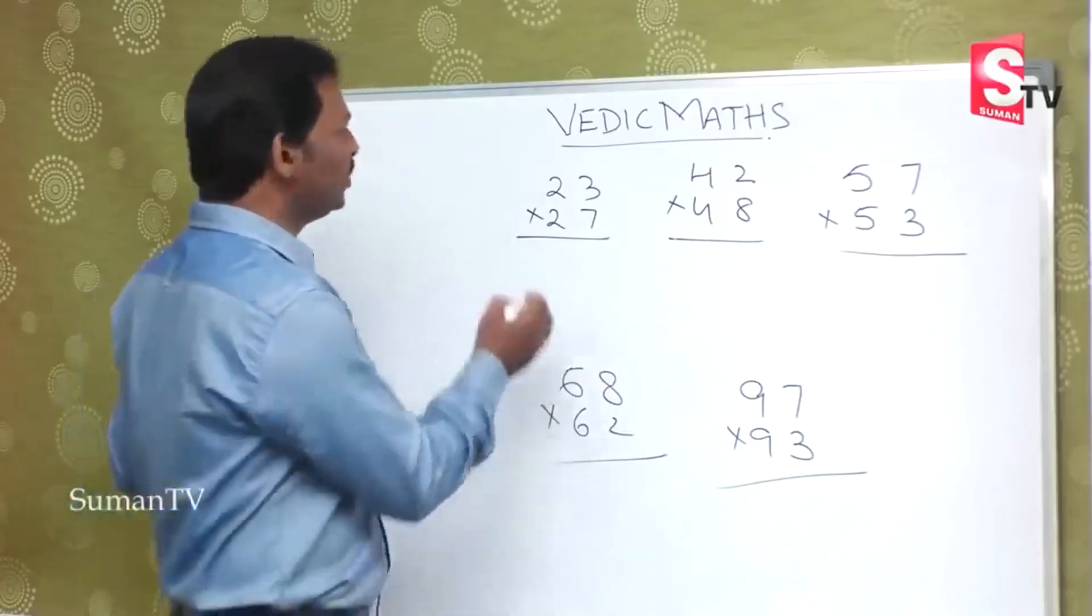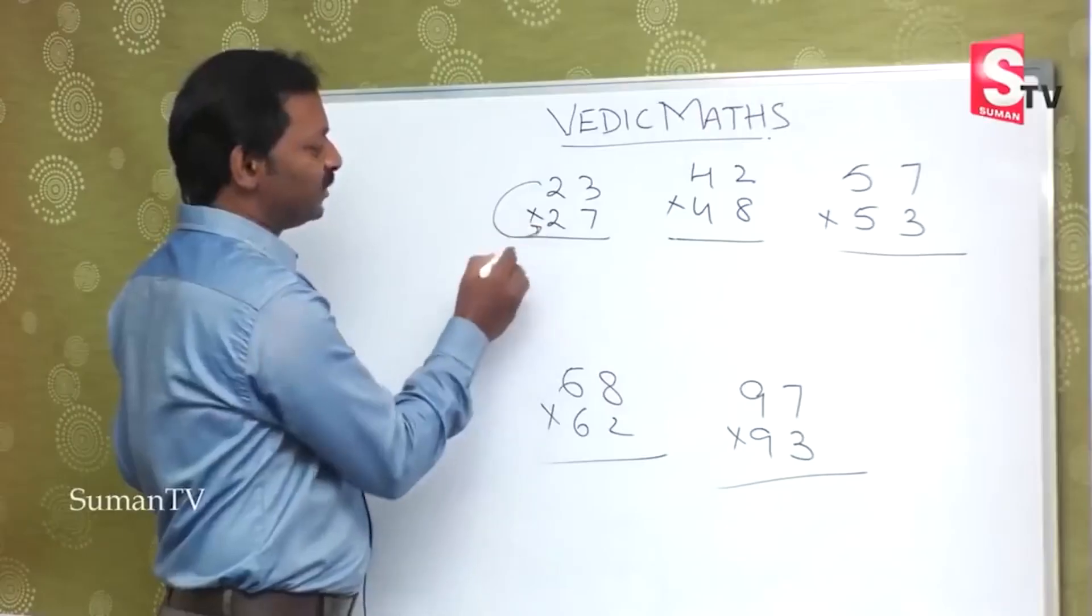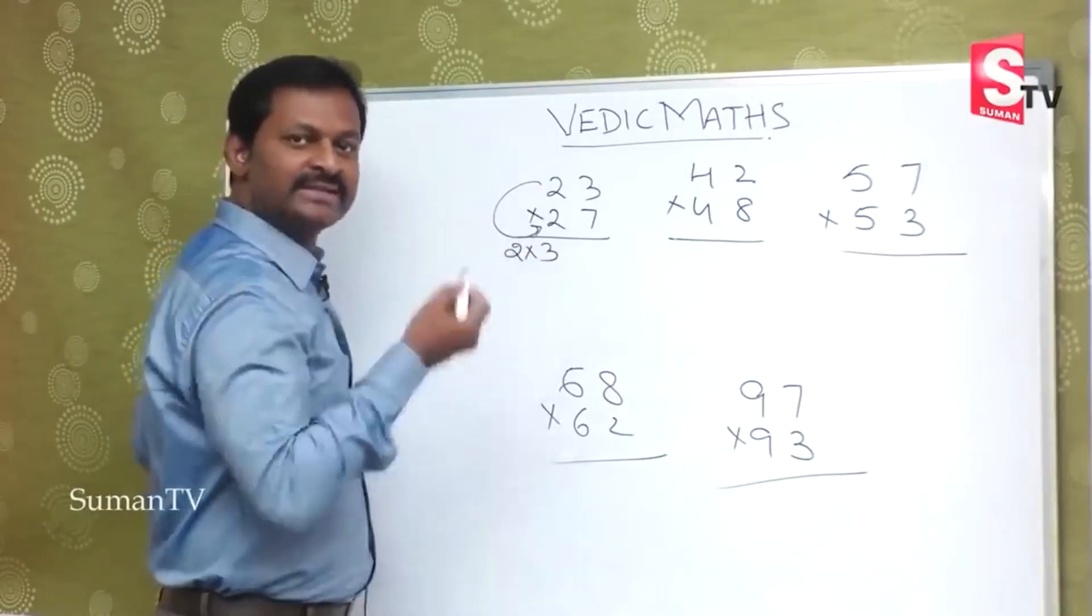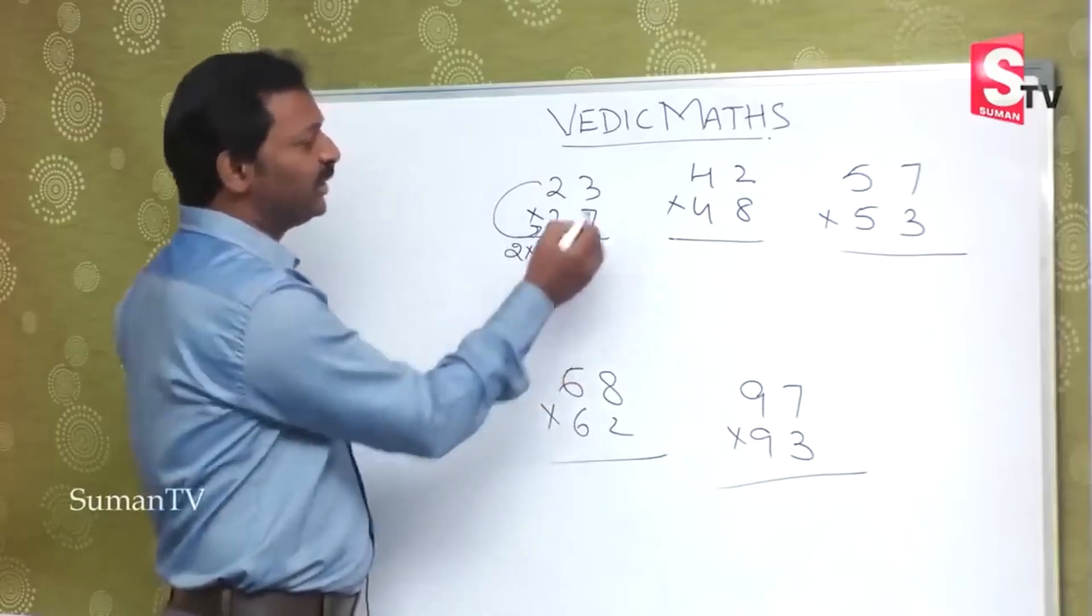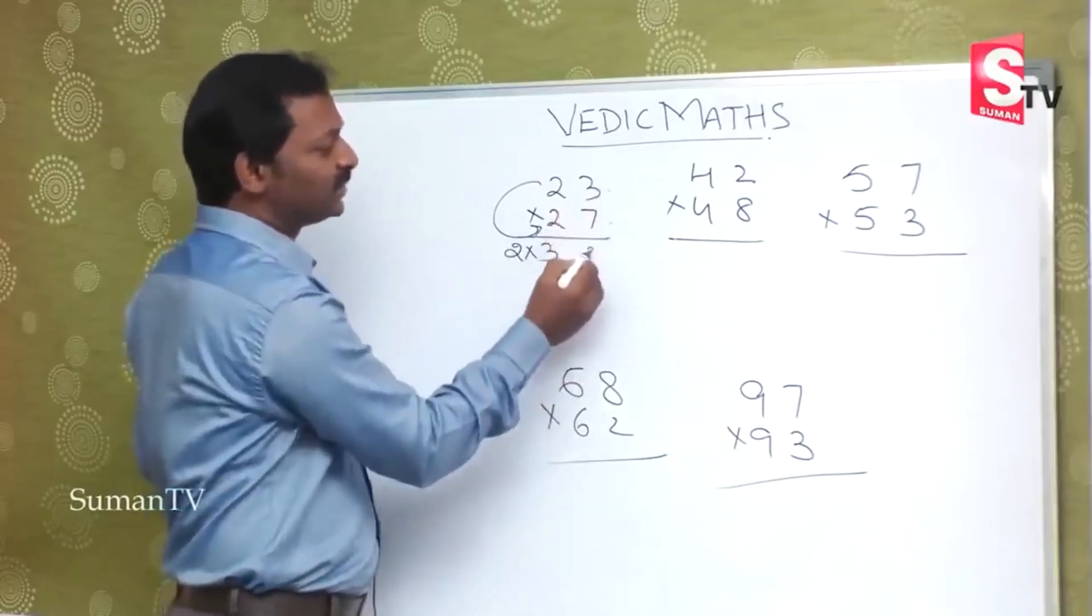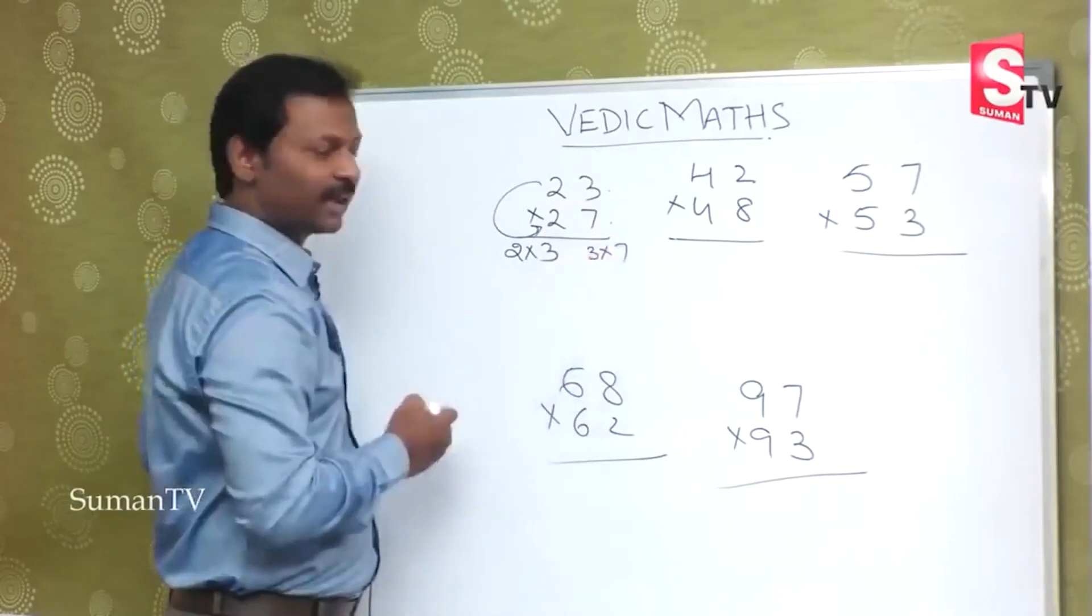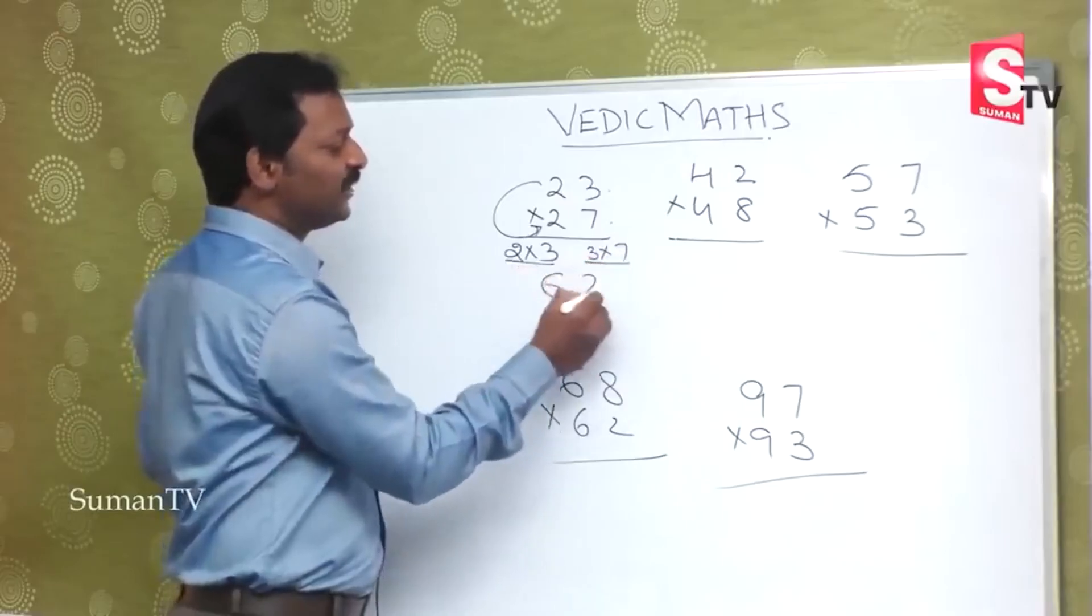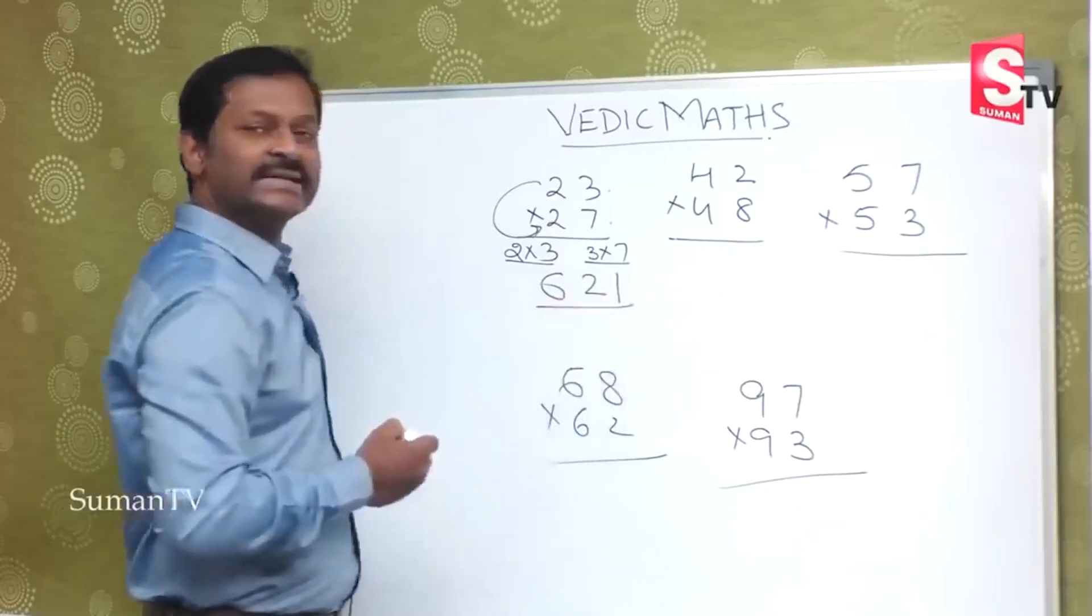Then this is the procedure. First number into next number. 2 into 3. First number is 2, then next number is 3. 2 into 3, this is direct multiplication. 3 into 7. 2, 3 is 6. 3, 7 is 21. The answer is 621.